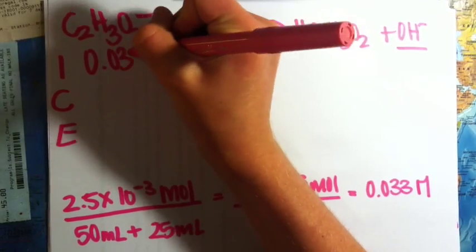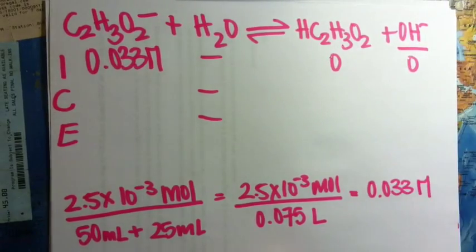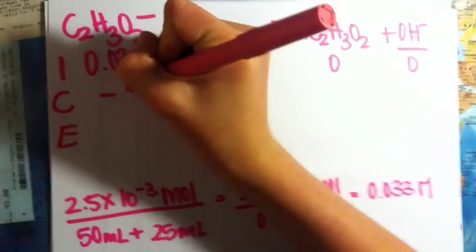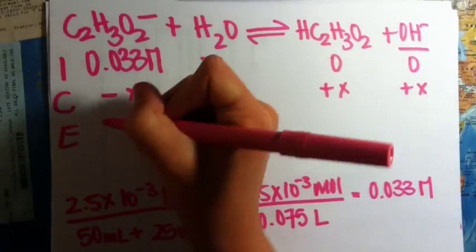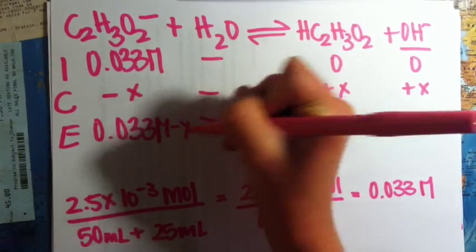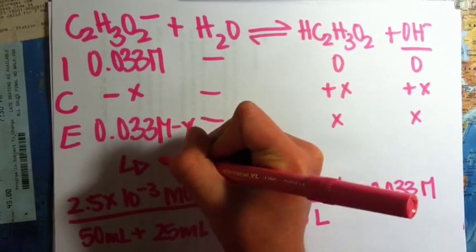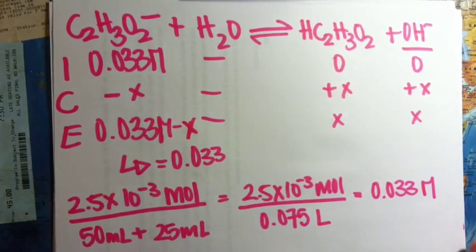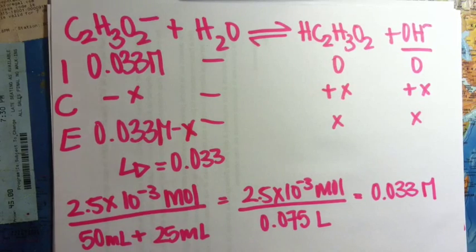We plug that into the ICE box. We start with none of those products, and the coefficient for every product and reactant is 1, so it's just minus x here. We add x on each side for the products. In the end, the equilibrium concentration is 0.033 minus x. For the products, it's just x and x. This is really just going to be equal to 0.033 because x is going to be a small number and won't change this value significantly.